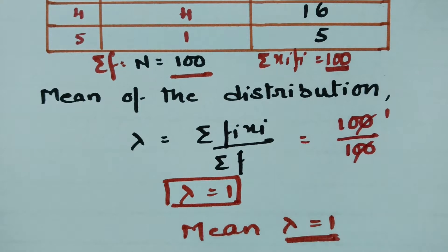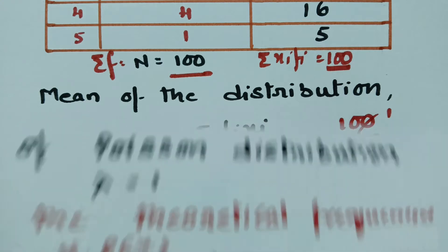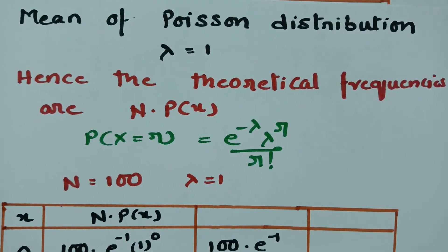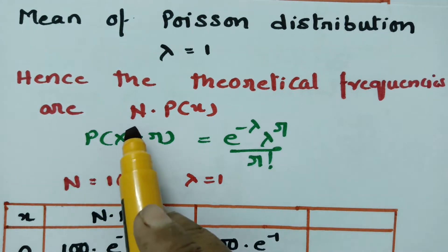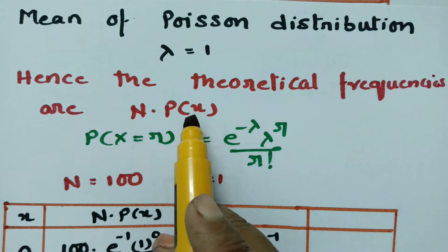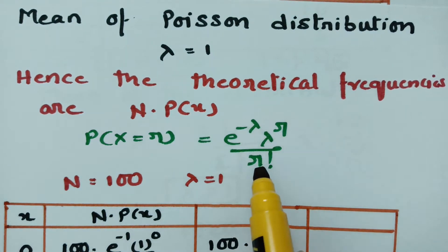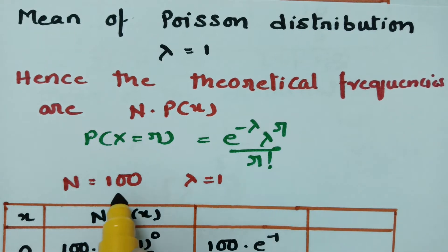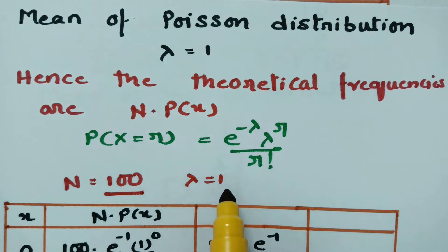After getting the mean, we have to apply Poisson distribution. The mean of the distribution lambda equals 1. The theoretical frequencies are n into p(x), where p(x) is the Poisson distribution formula: e to the power of minus lambda, times lambda to the power of r, divided by r factorial. Here n equals 100, and sigma(f) is nothing but n, and lambda equals 1.